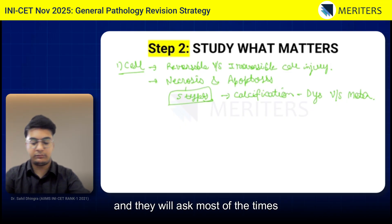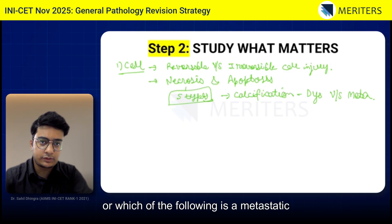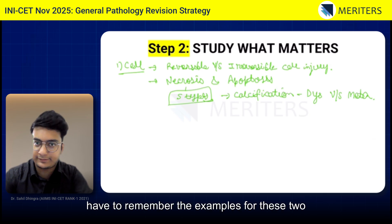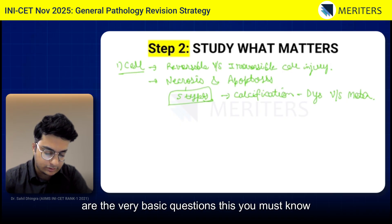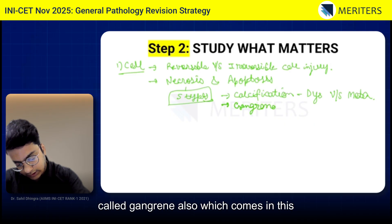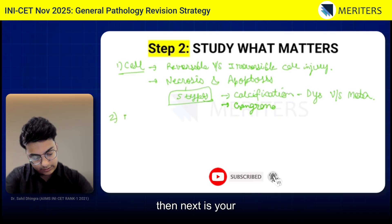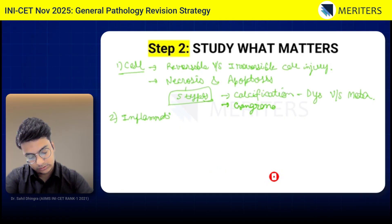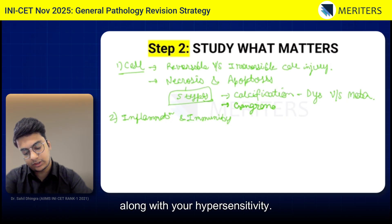Most of the time, they will ask which of the following is a dystrophic or which of the following is a metastatic calcification. You just have to remember the examples for these two so you can pick the correct answer — these are very basic questions you must know. There is also gangrene, which comes in this part. Next is Inflammation and Immunity, along with Hypersensitivity.